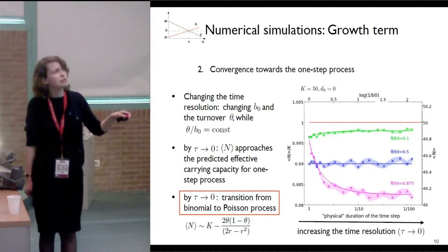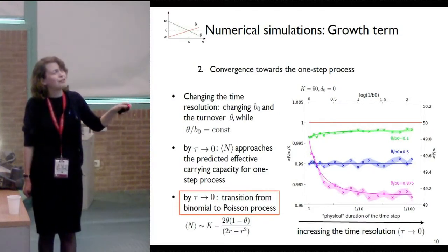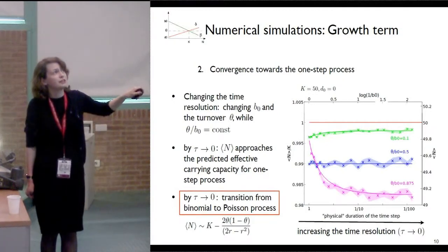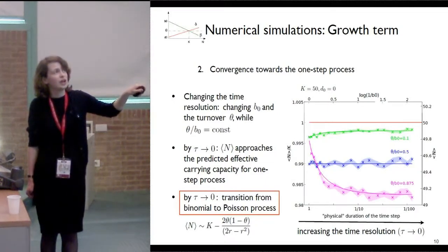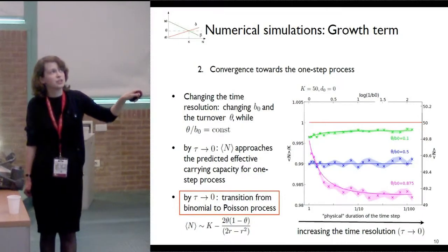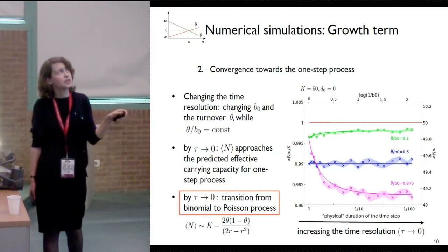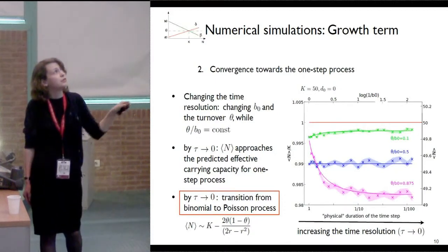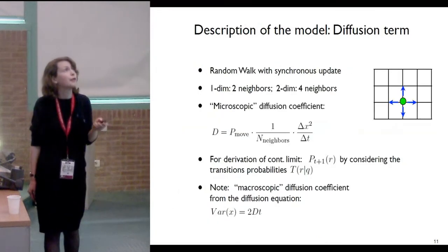An important point here is that when we decrease the time resolution, the relative fluctuation in the system can increase so that the effective carrying capacity can decrease, or the effective carrying capacity can approach K more closely, or can stay the same. This is dependent on the actual value of the ratio, and it's also a property of the binomial nature of the model.